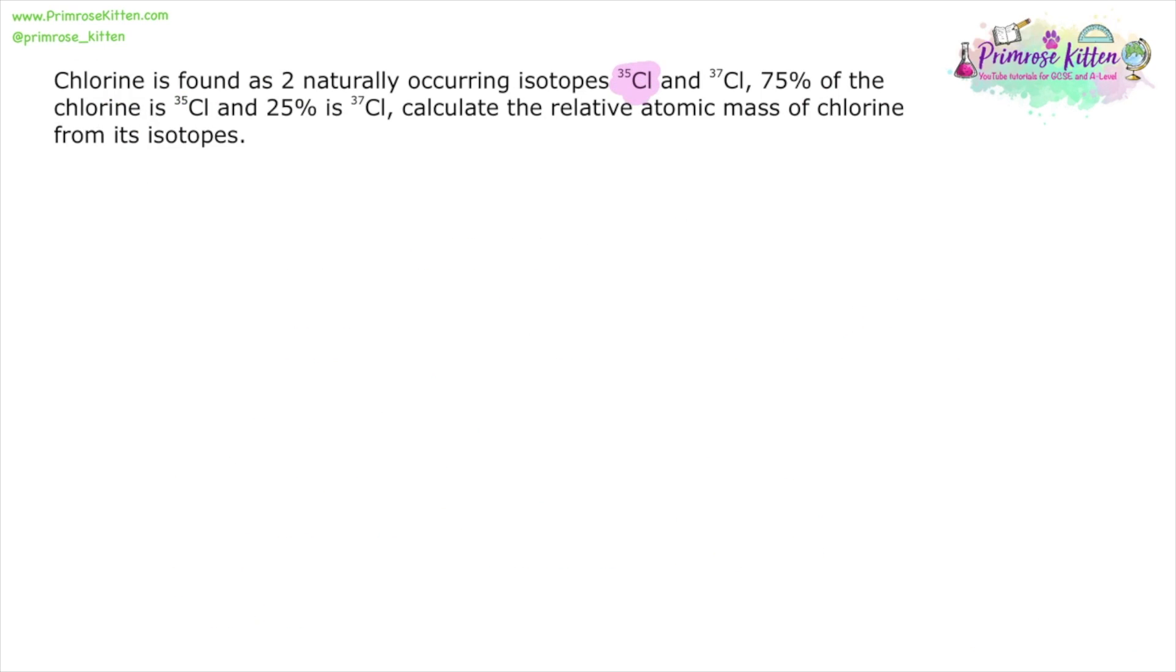Chlorine is found as two naturally occurring isotopes, chlorine-35 and chlorine-37. 75% of chlorine is chlorine-35 and 25% is chlorine-37. Calculate the relative atomic mass of chlorine from its isotopes. If we summarize the information from the question, 25% is chlorine-37 and 75% is chlorine-35.